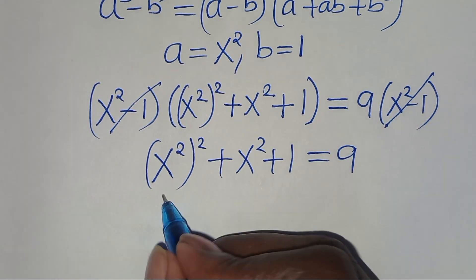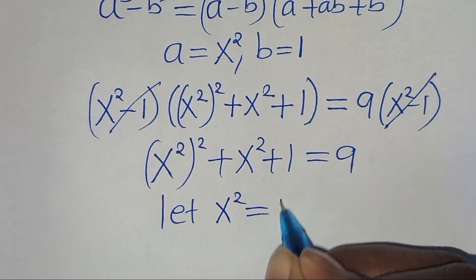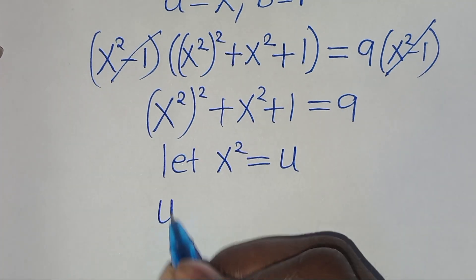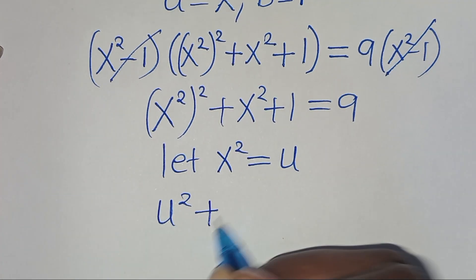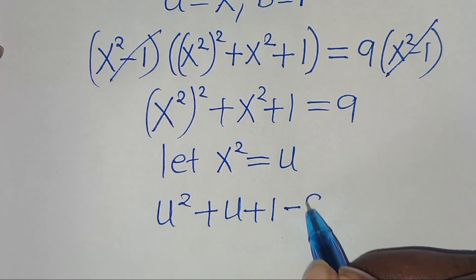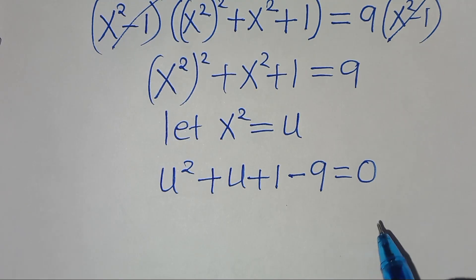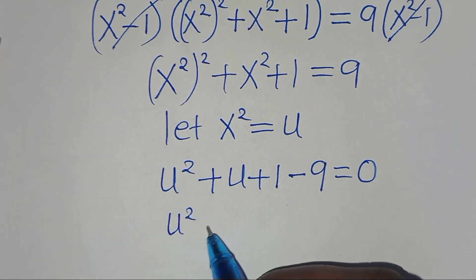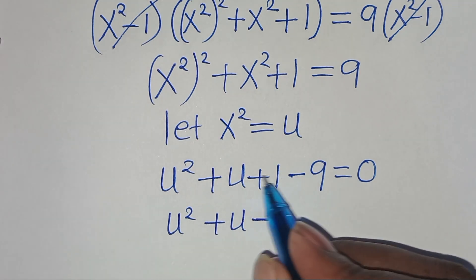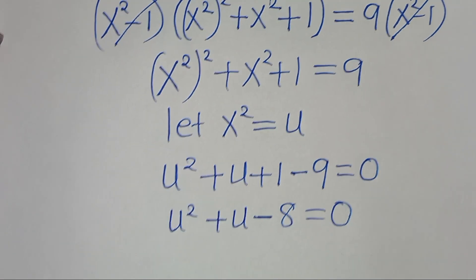So we can let u equal x to the power of 2, so that now we have u squared plus u plus 1. Taking 9 to the left-hand side, this becomes minus 9, this is equal to 0. So we have u squared plus u, then plus 1 minus 9, which is minus 8, this is equal to 0.